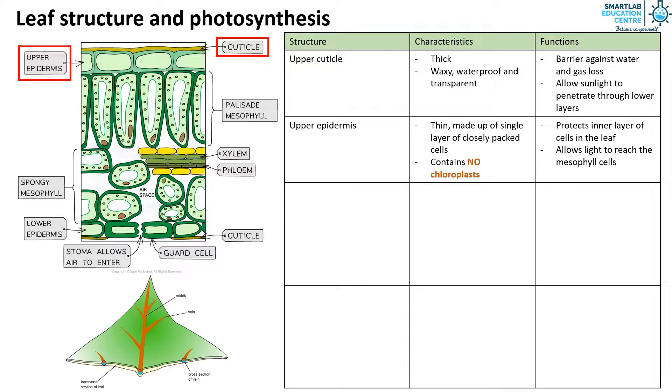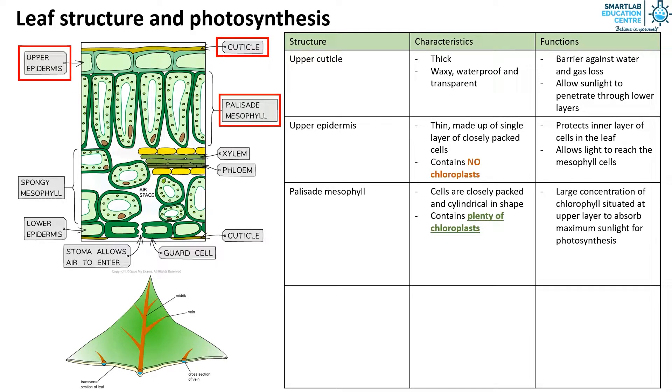The palisade mesophyll are made up of cells that are closely packed and cylindrical in shape. These cells contain plenty of chloroplasts. The large concentration of chlorophyll situated at upper layer helps absorb maximum sunlight for photosynthesis. The close packing helps keep as few cell walls as possible between sunlight and chloroplast.